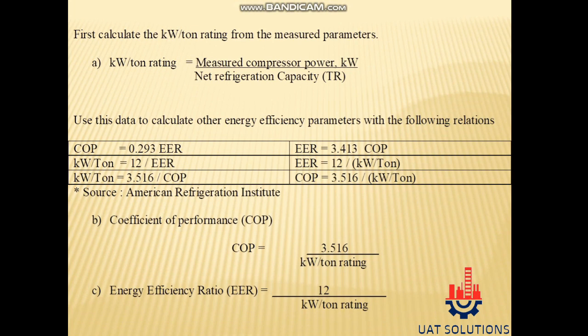Use this data to calculate other energy efficiency parameters with the following relations: COP equals 0.293 × EER; kW per ton equals 12 ÷ EER; kW per ton equals 3.516 ÷ COP; EER equals 3.413 × COP; EER equals 12 ÷ (kW per ton); COP equals 3.516 ÷ (kW per ton). Therefore: COP equals 3.516 divided by kW per ton rating; EER equals 12 divided by kW per ton rating.